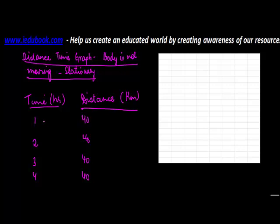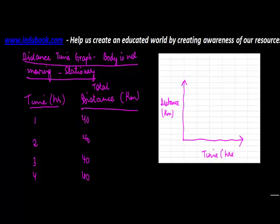If you see, even though the time has increased from 1 to 2 to 3 to 4 hours, the total distance covered has remained stationary at 40 kilometers. So, distance in kilometers on the y-axis — 10, 20, 30, 40 — and time in hours on the x-axis — 1, 2, 3, 4.